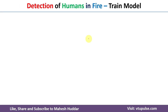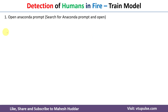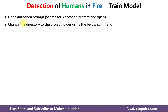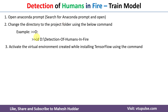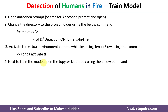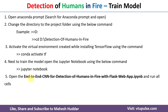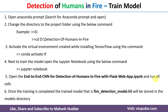Once installation is done, you need to train the model. Open the Anaconda prompt again, change the directory using D: and cd, then activate the virtual environment using conda activate tf. To train the model, open Jupyter Notebook using the jupyter notebook command. Open the file 'end-to-end-cnn-for-detection-of-humans-in-fire-with-flask-web-app.ipynb' and run all cells. Once training is completed, the trained model — fire_detection_model.h5 — will be stored in the model directory.